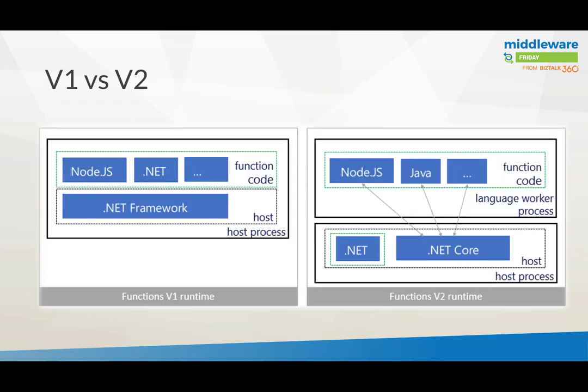Looking at the differences between versions one and two: on the left-hand side, version one uses the full .NET framework with your function code hosted in an app service — either an app service plan with reserved infrastructure or a consumption plan. Version two has the same hosting options but is targeted towards .NET Core, which has a lesser footprint and is more cross-platform. Additionally, the function code is separated from the host process in version two, whereas in version one they were all in one.